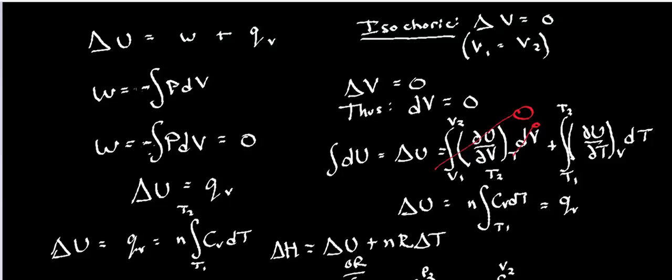In the last video, we looked at how to calculate work, heat, internal energy, and enthalpy for an isothermal process. Another process that we can get is something called an isochoric process.